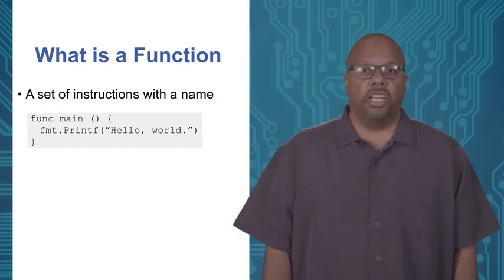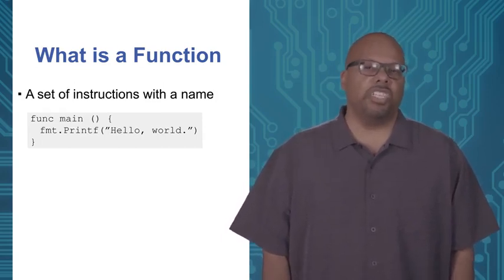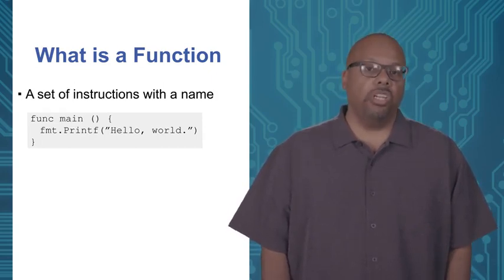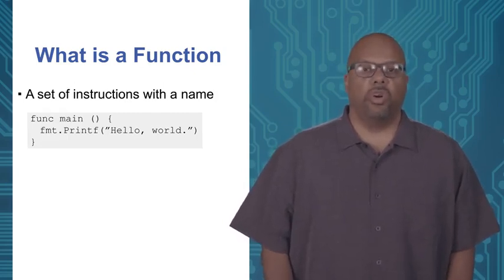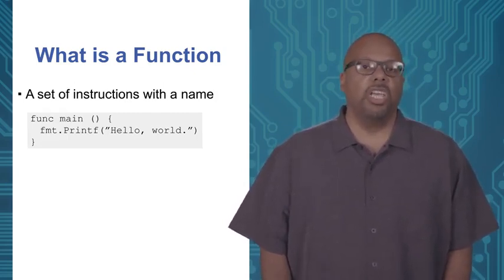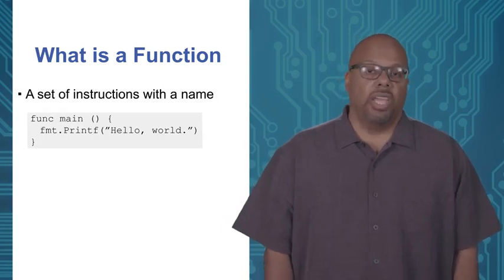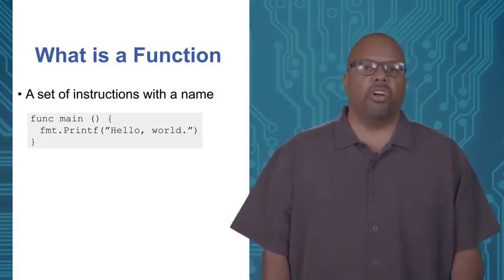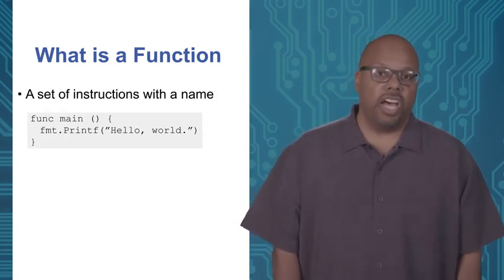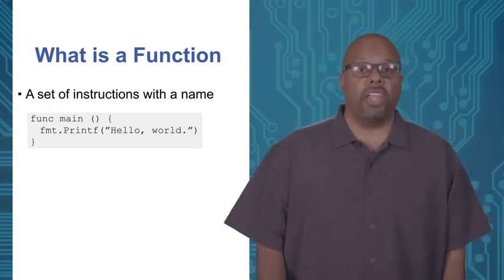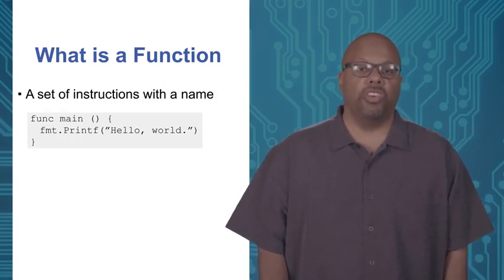The main function is actually a special function in the sense that you never call it explicitly. When you run your program from the command line, the main function gets called and invoked immediately. Calling a function means to execute that function, and that happens automatically with main. But for any other function you define, you have to call that code explicitly.